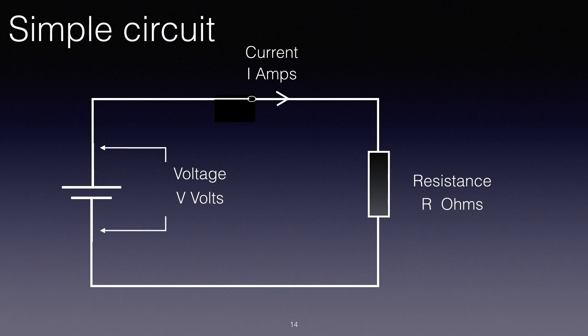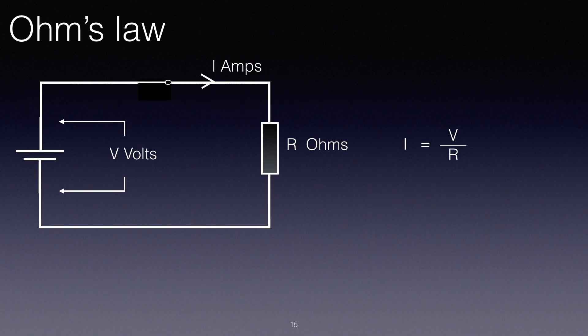This leads us to our first equation. I equals V over R. What this is saying here is that the current is the voltage divided by the resistance. You can see that the greater the voltage, the more the current, because that is on the top of the fraction, V over R.